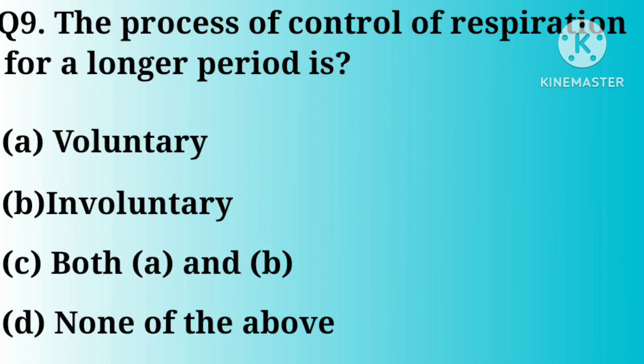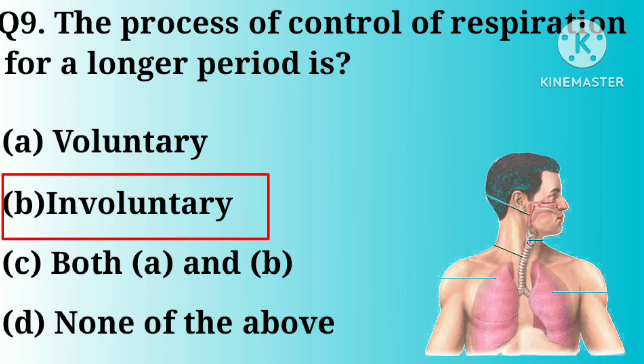Question number 9. The process of control of respiration for a longer period is: Option A. Voluntary. B. Involuntary. C. Both A and B. D. None of the above. Correct answer: Option B.